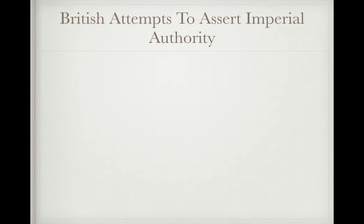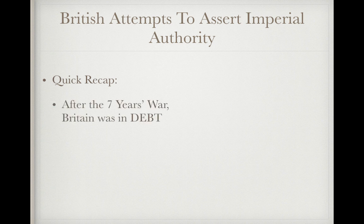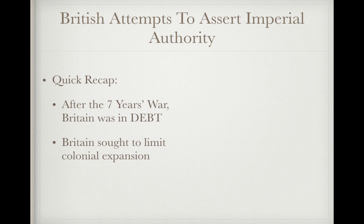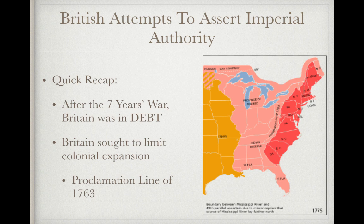Let's begin by talking about British attempts to assert imperial authority, but we need to do a quick recap to fully understand this video. If you remember, after the Seven Years War, Britain was in debt — major debt — and they needed to raise revenue. Britain wanted to limit colonial expansion, so they did so with the Proclamation Line of 1763, which forbid colonial expansion past the Appalachian Mountains.